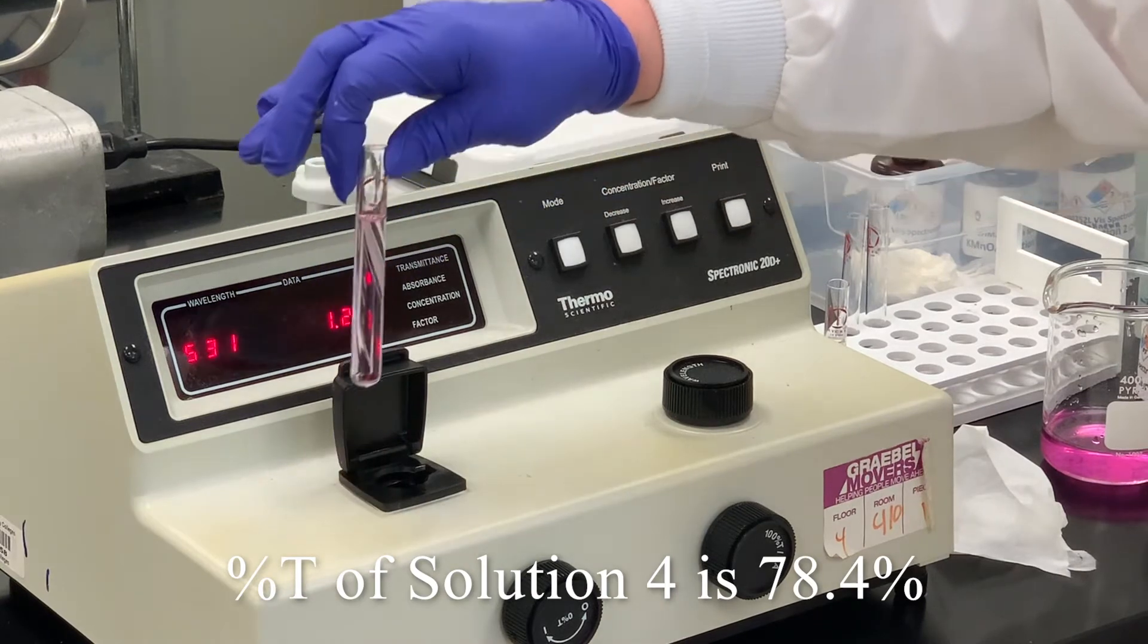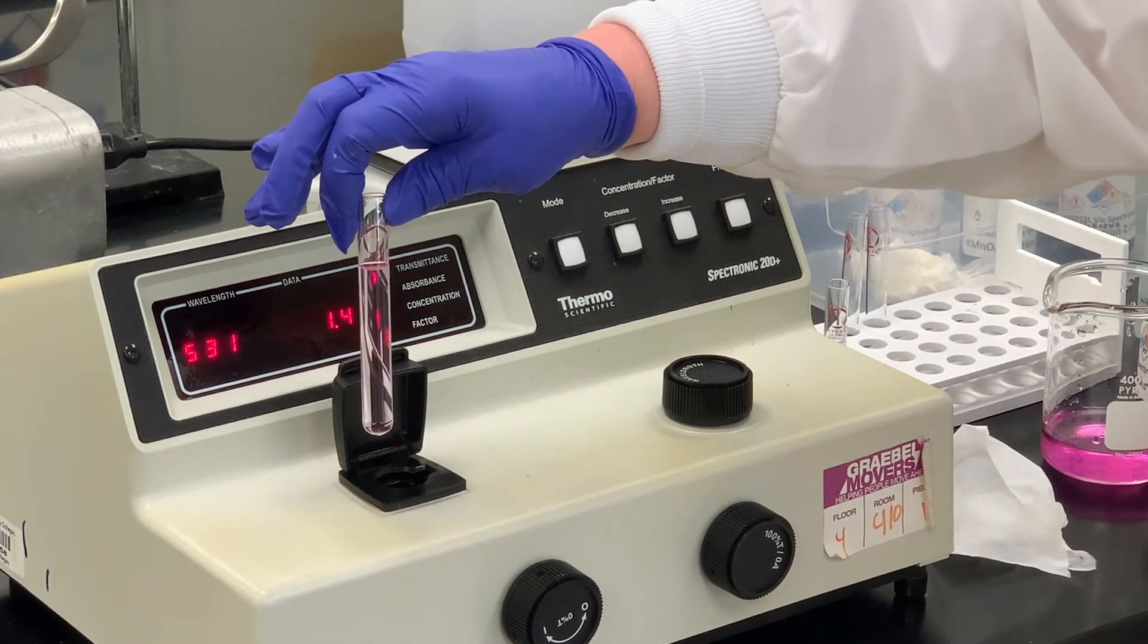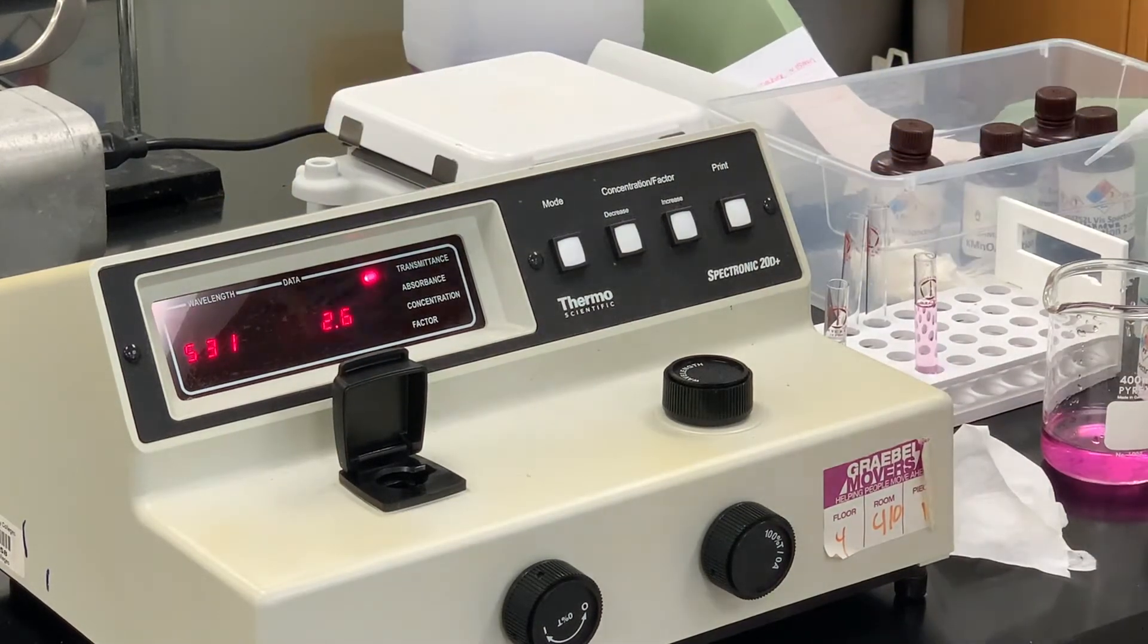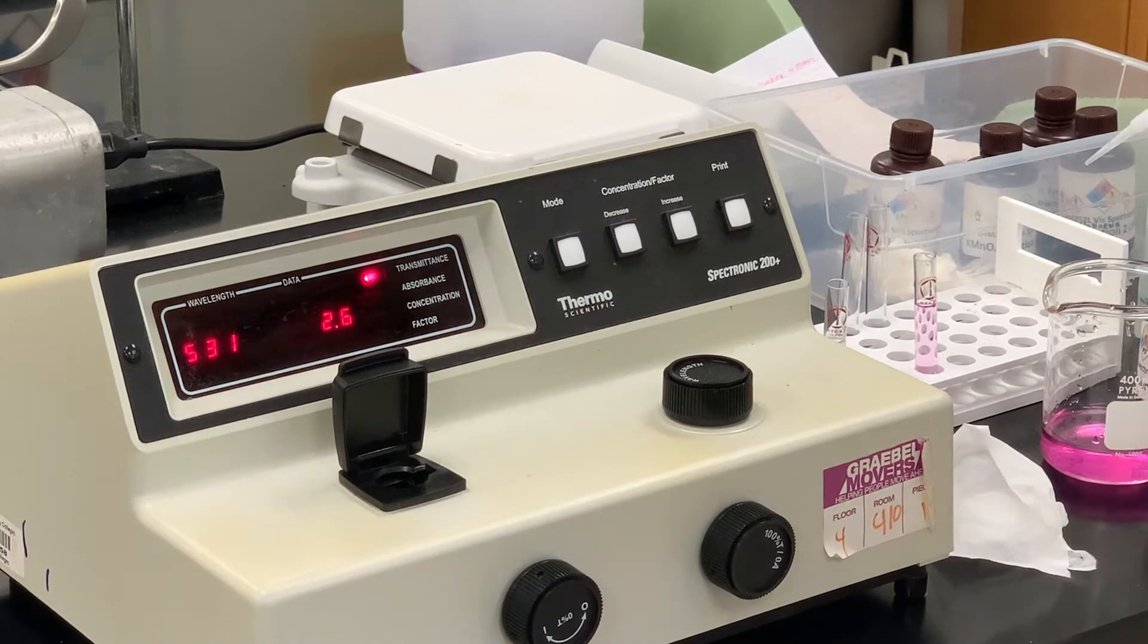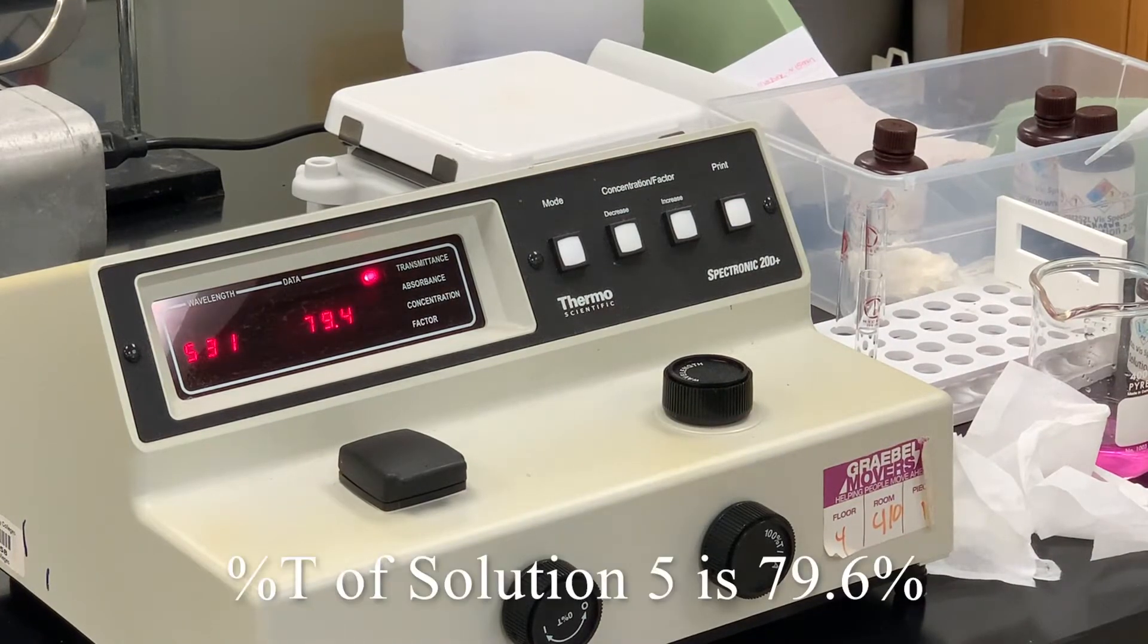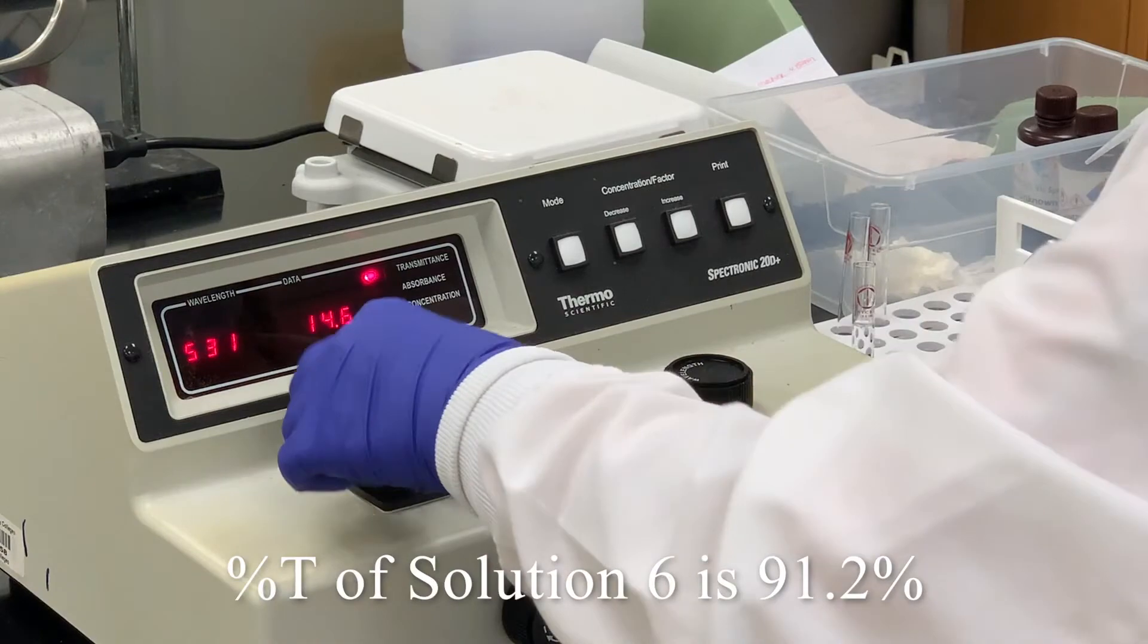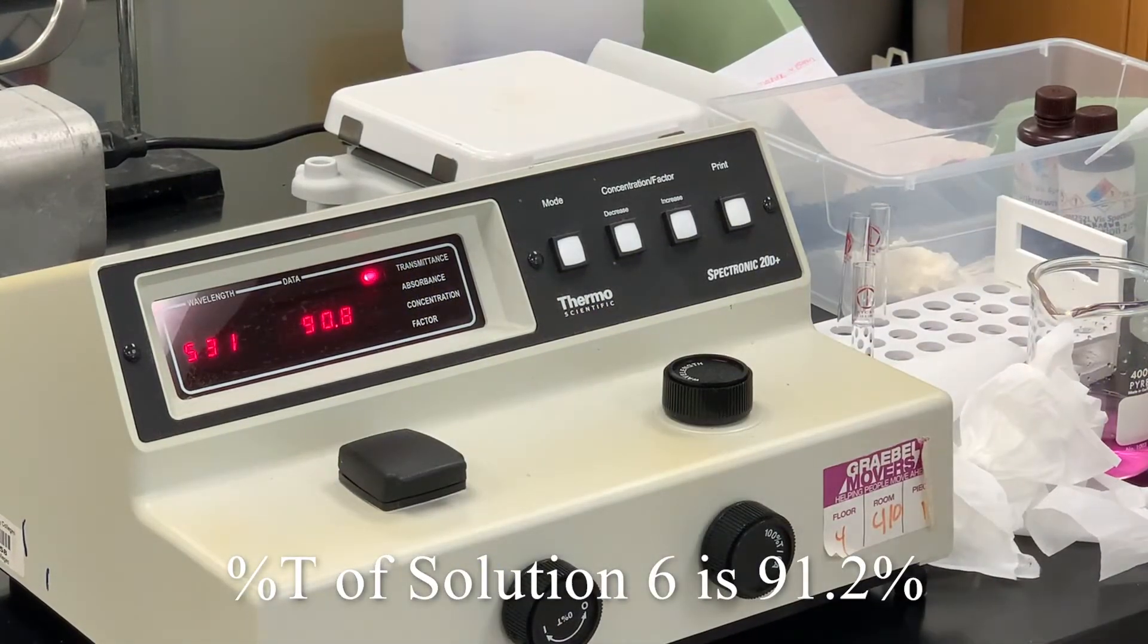And you probably can feel that as we're going to these higher solutions that they're getting more dilute, the color is less saturated, which makes sense because how much light is being absorbed is going to be dependent on the concentration. And solution five now is 79.4. And solution six is 91.2.